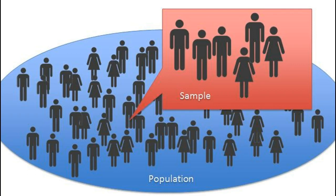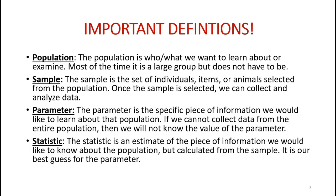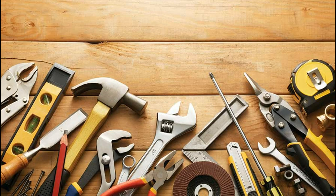Recall from previous chapters that researchers are often interested in learning about a population. Unfortunately, collecting data from every element in the population can be difficult. Instead, researchers will take a subgroup from the population, known as the sample, to examine. In this chapter, we're going to continue to develop a set of tools that will allow us to take the information contained in the sample to say something reasonable about what is occurring in the population.